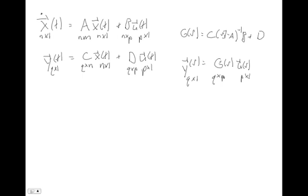Each of the scalar transfer functions is a single input, single output transfer function that maps one of our inputs to one of our outputs, and it's a big matrix of these. So it's easy if you start with a state space formulation to compute the transfer function. The question is, what if you're given a transfer function? What if I were to give you this G of S? Could you take this G of S and go back and figure out what A, B, C, and D are? That's what this video is about, and the short answer is maybe — maybe you can and maybe you can't. There are some transfer functions that have no state space formulation.